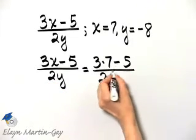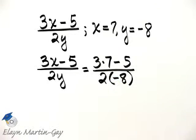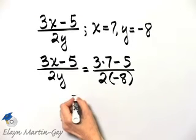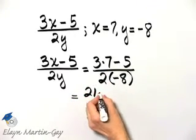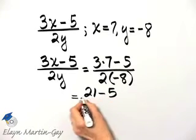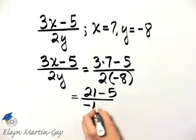For 2 times Y, I'll use parentheses: 2 times negative 8. Now let's simplify. This is 3 times 7, which is 21, minus 5. In the denominator, 2 times negative 8 is negative 16.